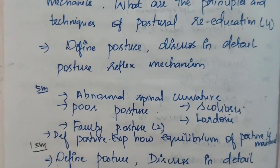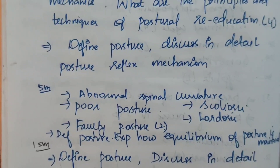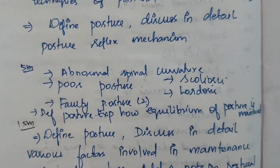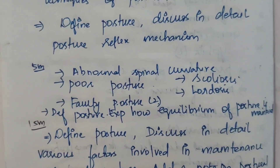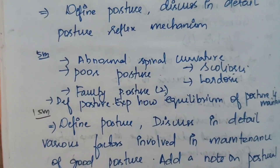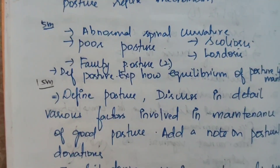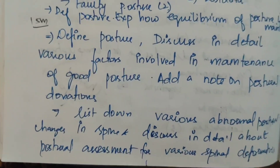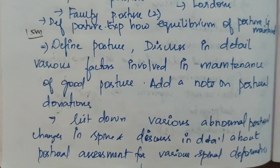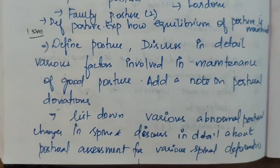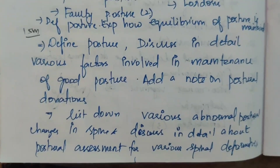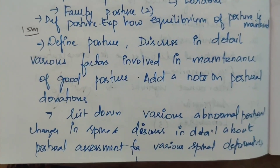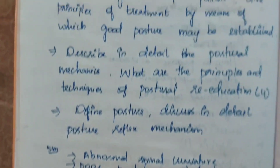Next: define posture and discuss in detail about postural reflex mechanism (5 marks). Topics in 5-mark questions include: abnormal spinal curvature, poor posture, scoliosis, lordosis, and faulty posture. In 15-mark questions: define posture, explain how equilibrium of posture is maintained; define posture and discuss various factors involved in maintenance of good posture, add a note on postural deviations, list various abnormal postures, changes in spine, and discuss postural assessment for various spinal deformities. All covered under postural-related topics.